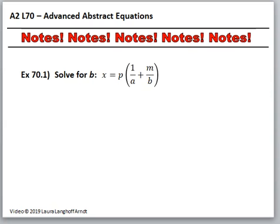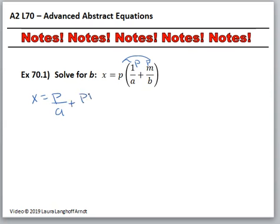Alright, first, solve for B. These are so much fun. Of course the first thing we have to do here is what we have to do every time we see parentheses, and that is distributive property. So we end up with X equals — we're going to multiply by P and by B — so we have P over A plus PM over B.